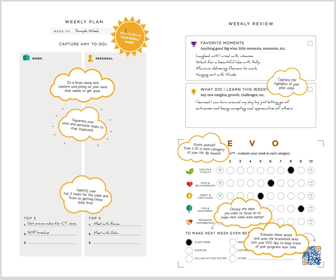Hey everyone, today we're going over how to fill out the weekly section of your Evo Planner. First, we will start by filling out what week this is. Personally, I like to put the first and last day of the week, so I'll write February 1st to 8th. Do whatever feels right to you.